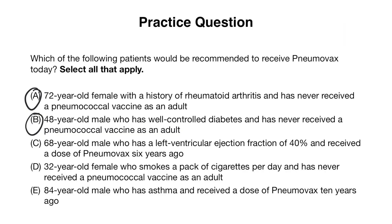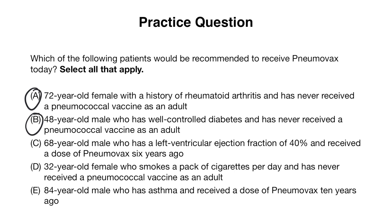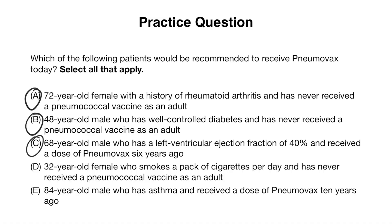Answer choice C: a 68-year-old male with a left ventricular ejection fraction of 40% who received a dose of Pneumovax six years ago. This patient is 65 and up, has a chronic medical condition — chronic heart disease — and received Pneumovax six years ago. Since the two doses need to be at least five years apart, this patient is actually eligible for his second dose of the Pneumovax vaccine.